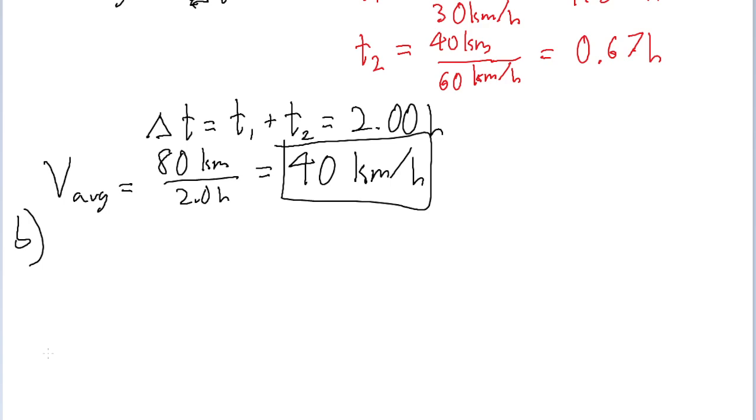So in this case, the displacement, the distance between the starting point and the ending point, is just a straight line. So what that means is that for this problem, the average speed is just going to be 40 kilometers per hour. The answers to part A and part B are the same.